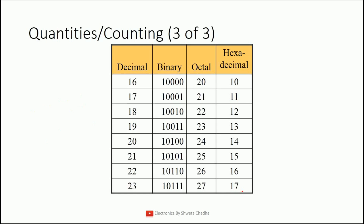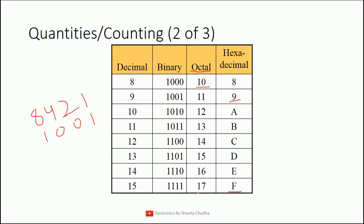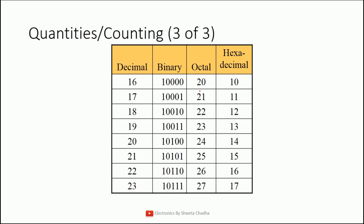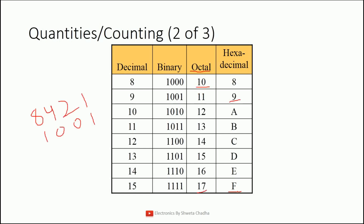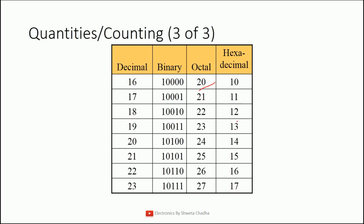So this is the next counting in hexadecimal: 10, 11, 12, 13, 14, 15, 16, 17. In octal, after 17 we directly started from 20 because 18 and 19 are not allowed. In hexadecimal, after F we write 10, then 11, 12, up to 17. After 17 in hexadecimal it will be 18, then 19, and after 19 — because after 9 we include A — we write 1A, 1B, 1C, 1D, 1E, 1F. And after 1F, we will have 20.